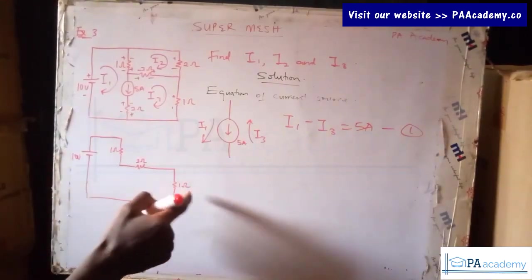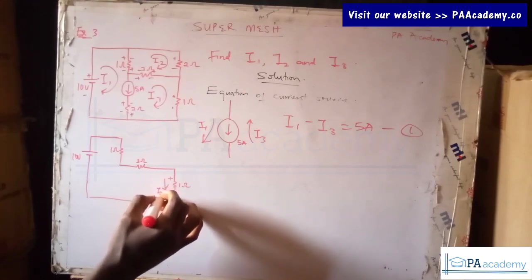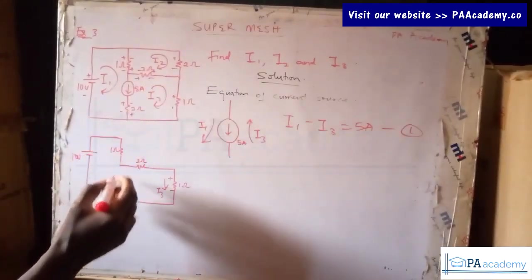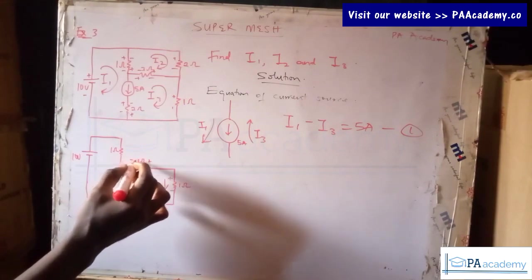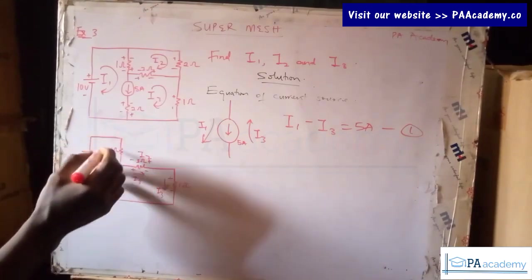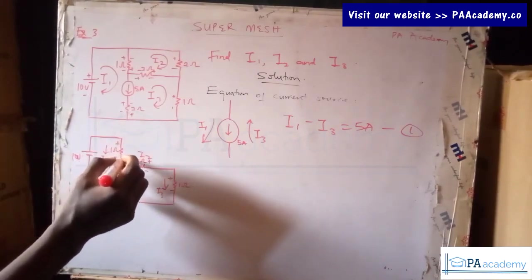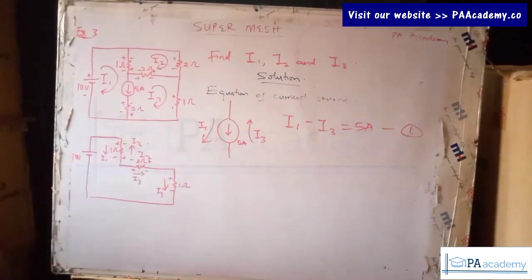In the one-ohm resistor, this is going to be plus and minus, and the current flowing through it is i3. In the three-ohm resistor, we have two currents flowing through it: i2 and i3. This is going to be plus and minus, and the current in that direction is i3, while the current in the other direction is i2. I hope everything there is clear.